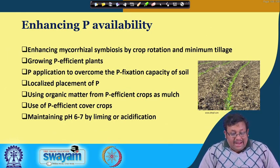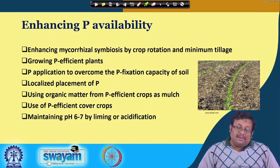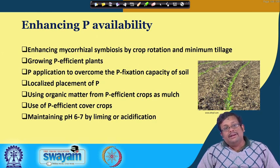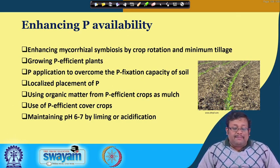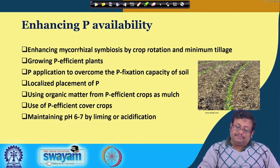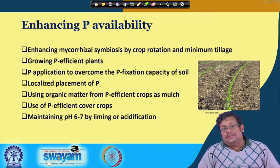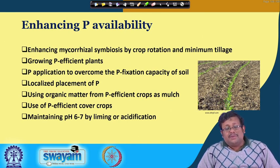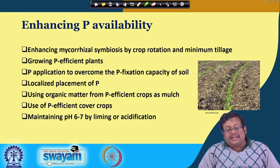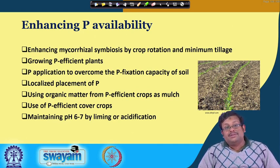How can we enhance phosphorus availability to the plant? Enhancing mycorrhizal symbiosis through crop rotation and minimum tillage is one way. Growing phosphorus-efficient plants that can withstand low phosphorus is another. Phosphorus application to overcome the P fixation capacity of the soil using localized band placement around the root reduces exposure to reactive clay surfaces. Using organic matter from P-efficient crops as mulch also helps enhance phosphorus availability.